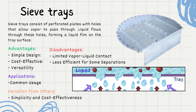Sieve trays find common usage in straightforward distillation processes where separation requirements are not highly complex. The primary distinguishing factor for sieve trays lies in their simplicity and cost effectiveness. They are designed to be uncomplicated and economical, making them stand out from more complex tray designs. In summary, sieve trays excel in simplicity and cost effectiveness, making them suitable for applications where a basic distillation process is sufficient.